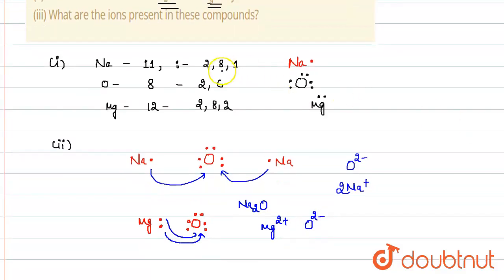And the next question is: what are the ions present in the compounds? We have already seen the ions involved in these compounds are basically Mg2+, O2-, Na+, and O2-. So I hope you understand this concept. Thank you very much.